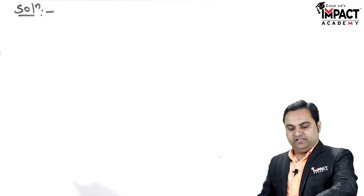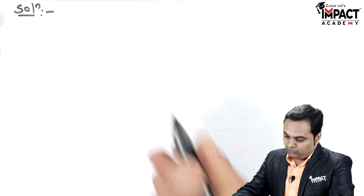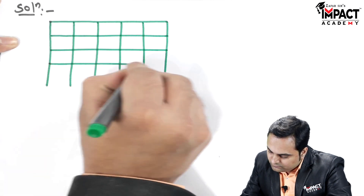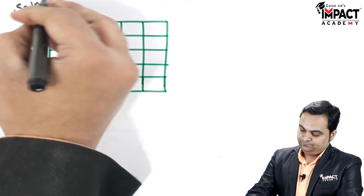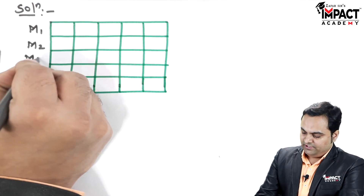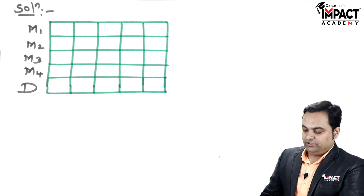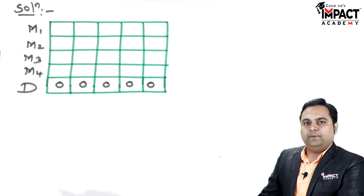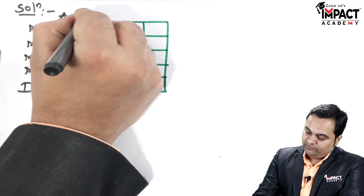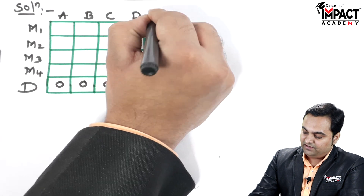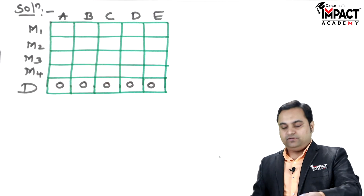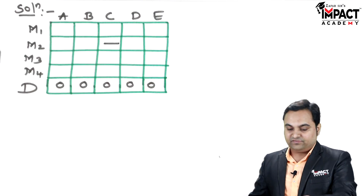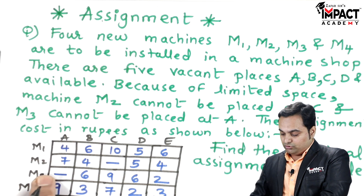In the solution, I draw the table again with five rows and five columns. The rows are machines M1, M2, M3, M4, and a dummy row D. The dummy row contains all zeros because it is added only to balance the problem. The columns represent the vacant places A, B, C, D, and E. The restrictions are marked: M2 cannot be placed at C (second row, third column), and M3 cannot be placed at A (third row, first column).